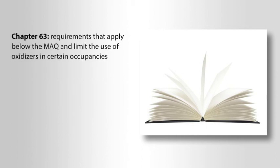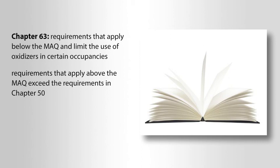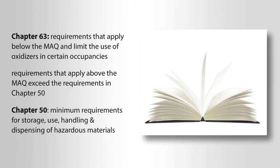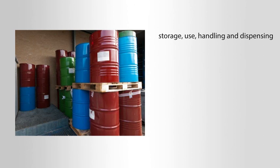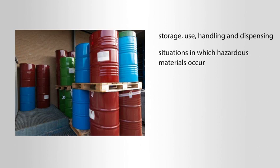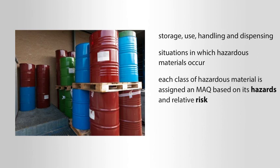Chapter 63 contains requirements that apply below the MAQ and limit the use of oxidizers in certain occupancies. This material-specific chapter also contains requirements that apply above the MAQ and exceed the requirements in chapter 50. Chapter 50 of the IFC sets forth the minimum requirements for the storage, use, handling, and dispensing of hazardous materials. These terms are defined in the fire code, and understanding them is important to proper code application, as they affect the MAQ. Each class of hazardous material is assigned an MAQ based on its hazards and the relative risk of the material to the building and its occupants.